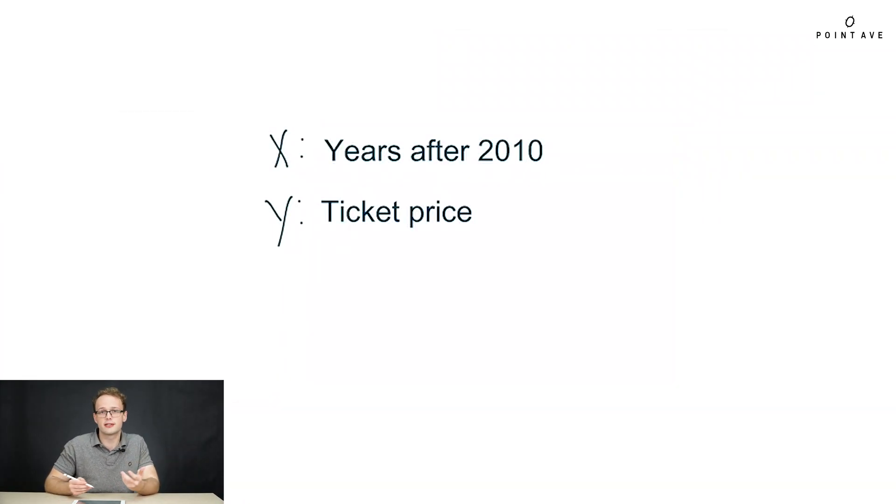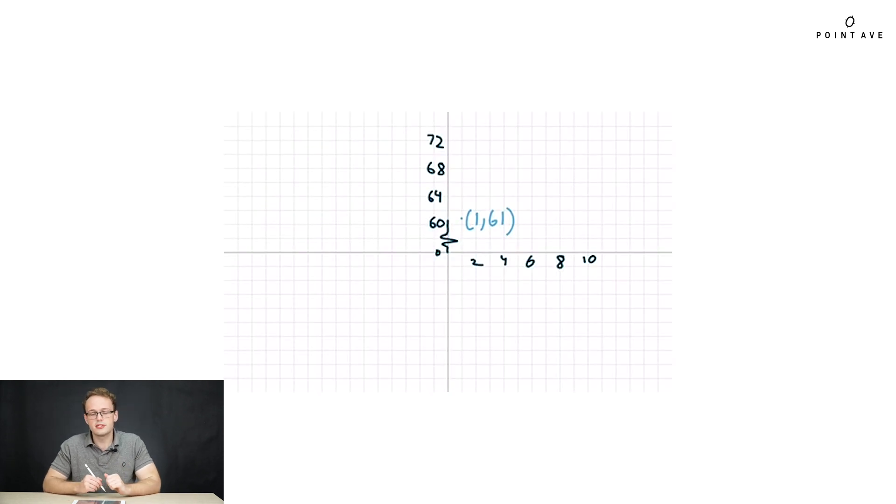Great, now that we defined our x and y, we can find our coordinate points. So moving here, we see our first coordinate point, which corresponds to one year after 2010, 2011, and ticket price is $61. So we get 1, 61.